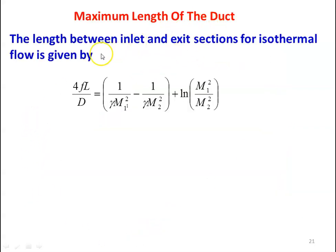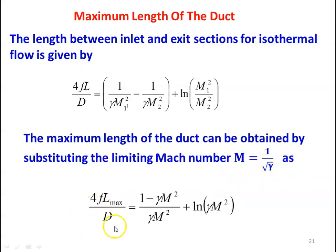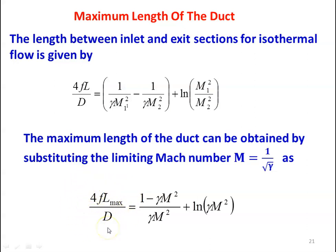The maximum length of the duct for the choking condition: the length between inlet and exit for isothermal flow is given by 4FL/D = (1 − γM1²) − (1 − γM2²) + ln(M1²/M2²). For maximum duct length, we substitute the limiting Mach number M = 1/√γ, giving 4FL_max/D = (1 − γM²)/(γM²) + ln(γM²). These values are available directly from gas tables.